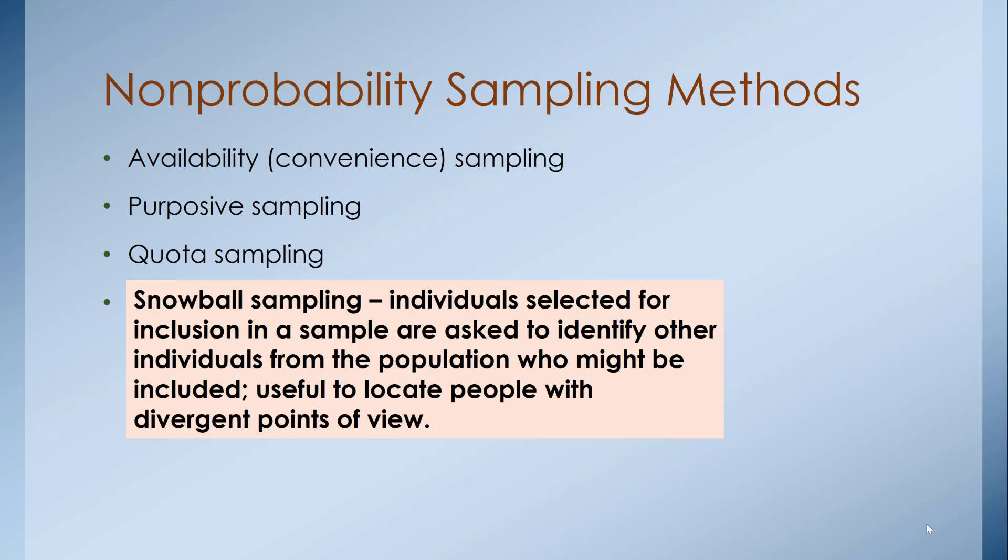The methods we use to obtain individuals to participate in our study are the hardest part. You can design the best study out there, but soliciting and inviting individuals to participate is very challenging. We often compromise rigor in sampling procedures to get participation — for example, moving from a random sample to purposive sampling because we need more individuals than a random sampling design can provide. That wraps up the overview of sampling methods.